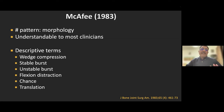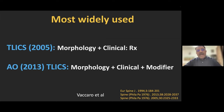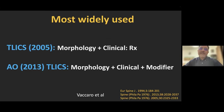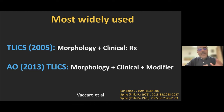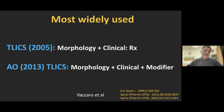McAfee in 1983 used descriptive terms like wedge compression, stable burst, unstable burst, flexion-distraction, chance, and translation. Currently, the two most widely used systems are both proposed by Vaccaro et al. In 2005 the spine trauma study group introduced TLICS (Thoracolumbar Injury Classification System), based on fracture morphology and neurology with a point-based scoring system. In 2013, the same group with AO modified it into the updated AO classification or AO-TLICS, again based on morphology, simplified clinical behavior, and modifiers.